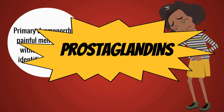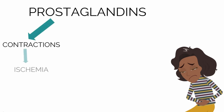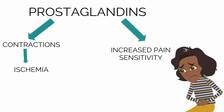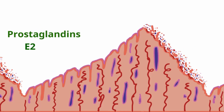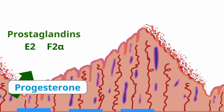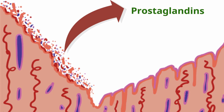Prostaglandins contribute to painful menses in two ways: they result in contractions and ischemia, as well as overall increased pain sensitivity by increasing the resting membrane potential of pain neurons, resulting in painful menses. Prostaglandins E2 and F2-alpha are produced by the endometrium in response to progesterone levels, which increase during the menstrual cycle and peak at the mid-luteal phase. Most of the prostaglandins present during the endometrial slough are created at that moment secondary to a short half-life. The prostaglandins are liberated by cell wall breakdown from the shedding endometrium.